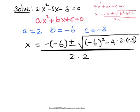We will now proceed to simplify this further. Negative of negative 6 would be positive 6 plus or minus square root. Inside the square root, we have square of negative 6. Square of negative 6 means negative 6 times negative 6, and so we will get 36.